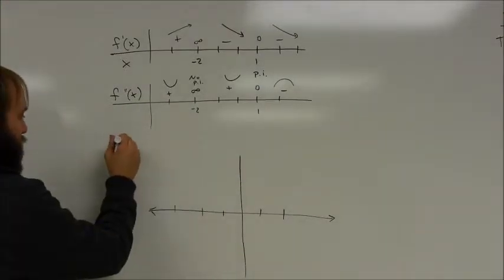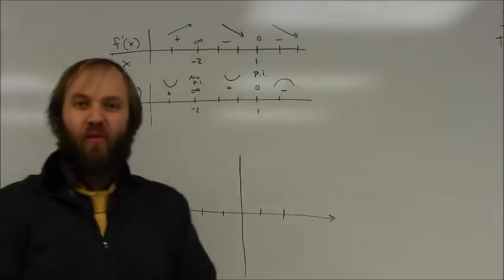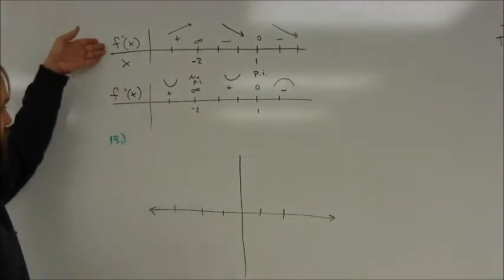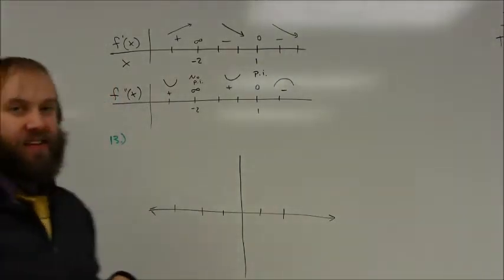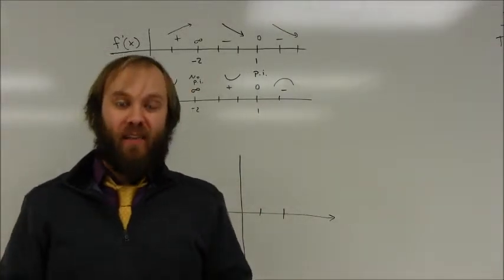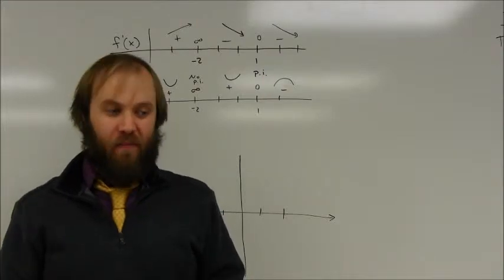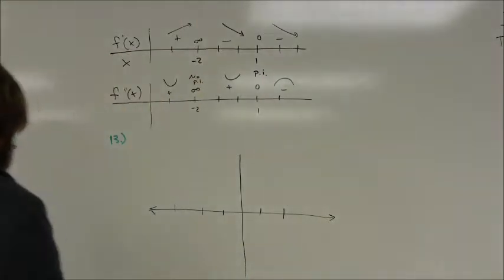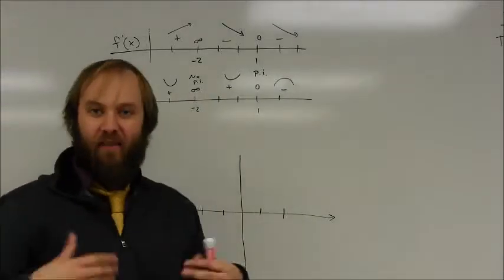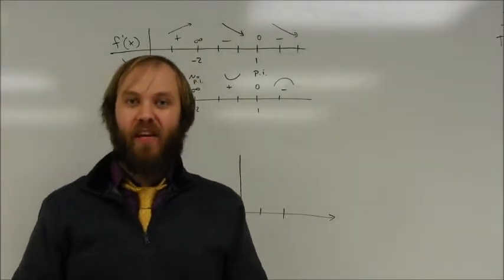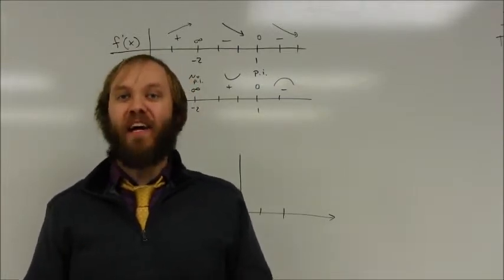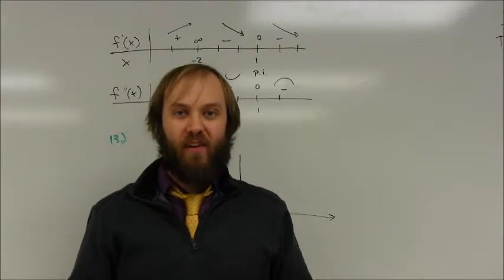This is problem number 13 from section 8.2 in Forrester's book. This time Forrester is giving you the number lines for the first derivative and the second derivative and asking you to plot the graph. If you line this up with your actual graph it makes it a little bit easier — you're really looking at two things at the same time. Some people can look at all the information and think about whether the graph goes up and down and how it's curved all at the same time. Some people prefer to do it in steps.